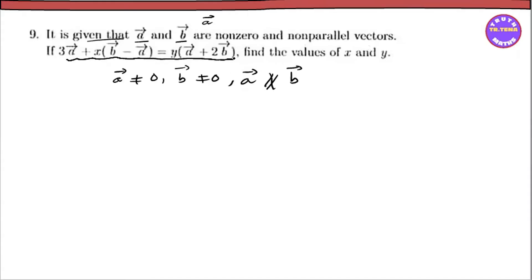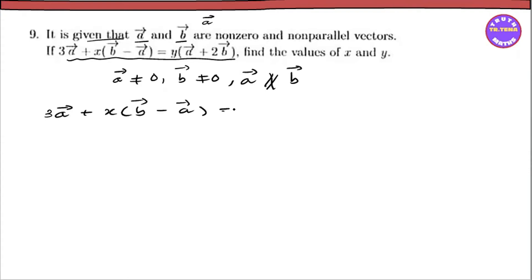Find the values of x and y, where x and y satisfy: the expression 3a vector plus x times b vector minus a vector equals y times a vector plus 2b vector.